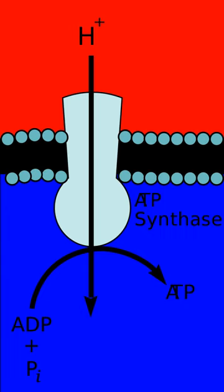In chloroplasts, light drives the conversion of water to oxygen and NADP+ to NADPH, with transfer of H+ ions across chloroplast membranes.